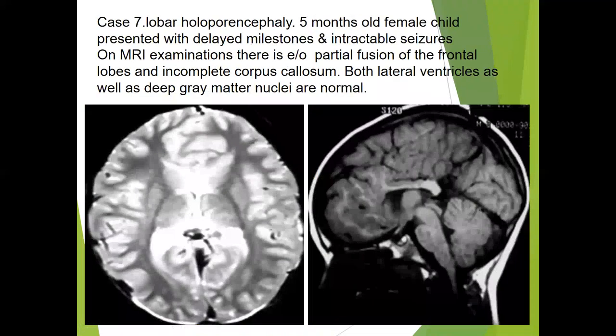The seventh case was of lobar holoprosencephaly. A five-month-old female child presented with delayed milestones and intractable seizure. On MR examination, there is evidence of partial fusion of the frontal lobes and incomplete corpus callosum. Both lateral ventricles as well as the deep gray matter nuclei are fused.